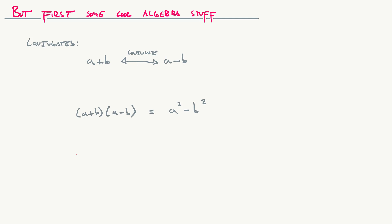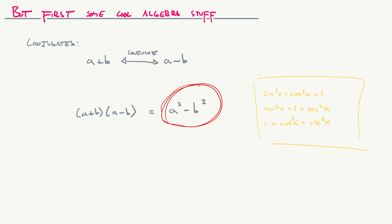You can check this by using FOIL or the box method yourself. Anytime I have the square of some trig function, that triggers for me — oh, maybe there's Pythagorean stuff involved. Whenever I have sin², cos², tan², cot², or whatever it is, I think about Pythagorean identities. If I can get one of these by multiplying a conjugate, I can potentially simplify the expression.